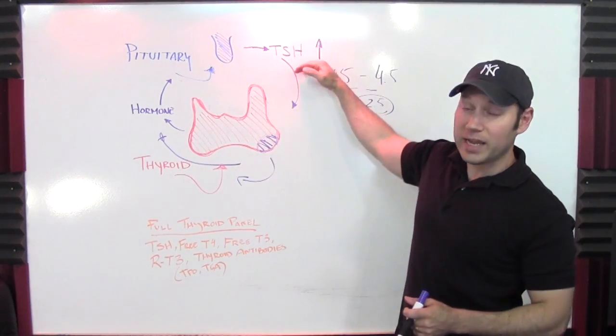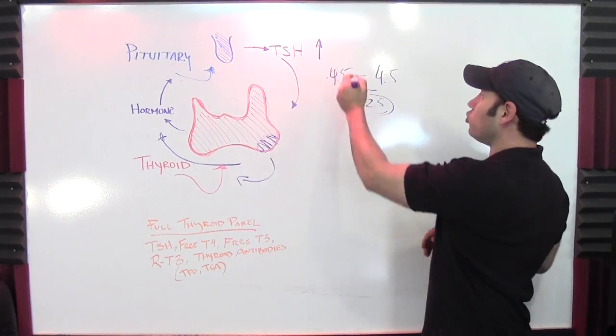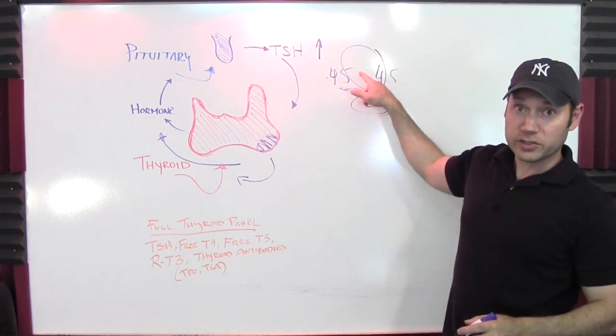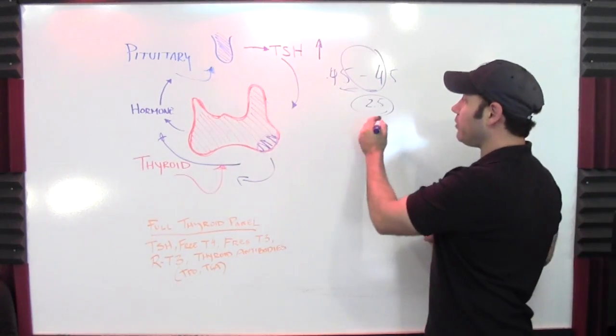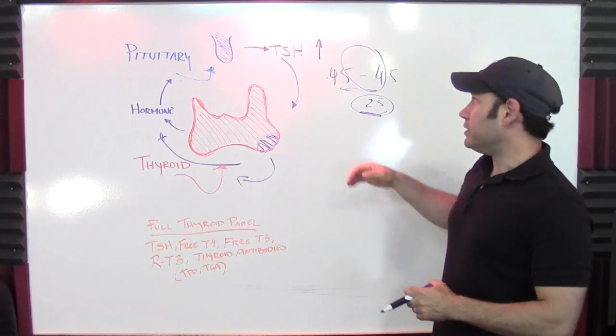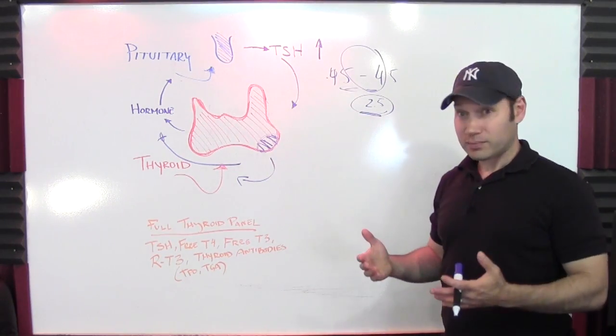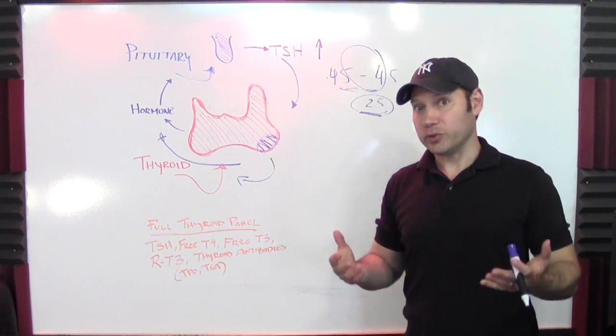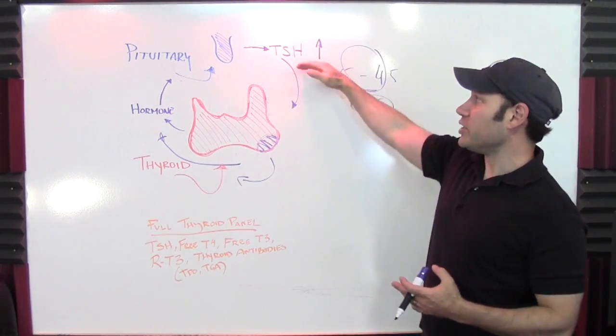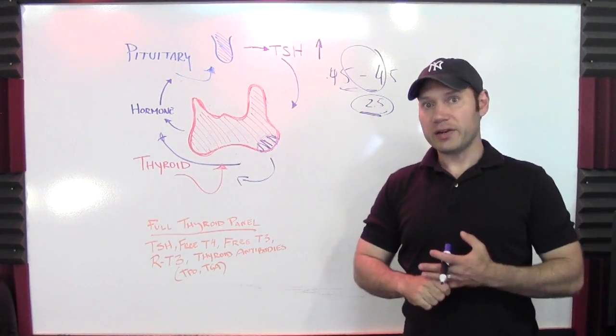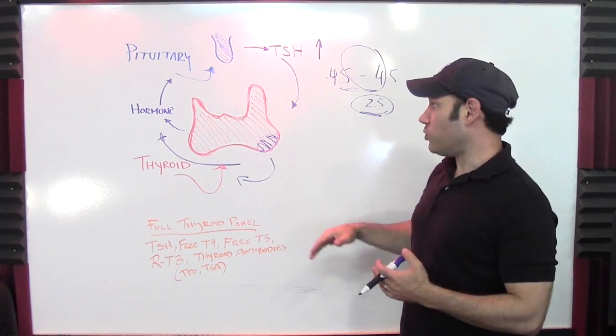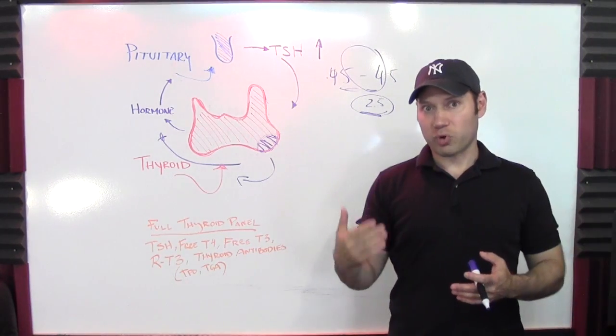So this TSH could actually end up in this normal range, certainly in this normal range, the old range that they use. But it could even end up in more of an optimal range. You could end up with TSH that's 1.7, 1.8. And that's not going to show up on anyone's radar. And so that's why TSH really isn't enough. It's not enough of a marker to tell whether your thyroid is functioning properly.